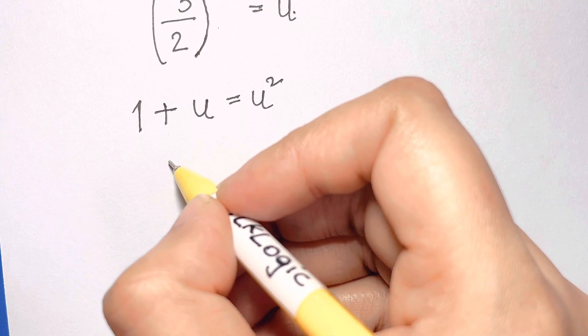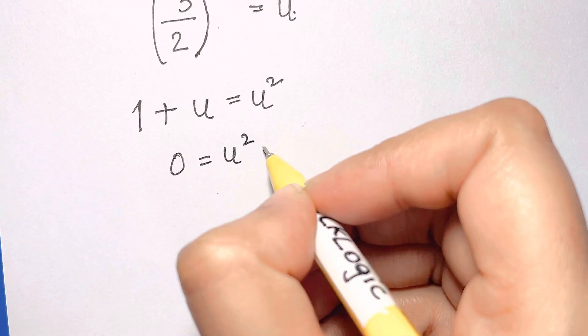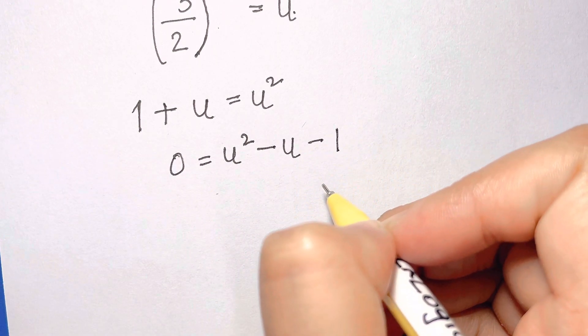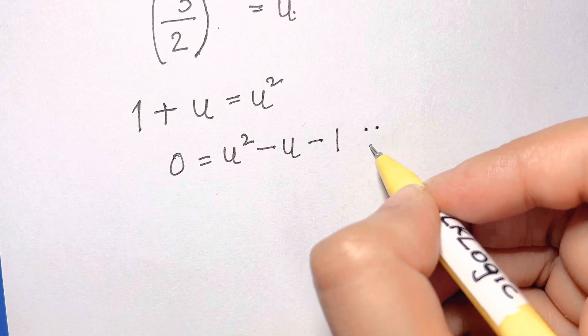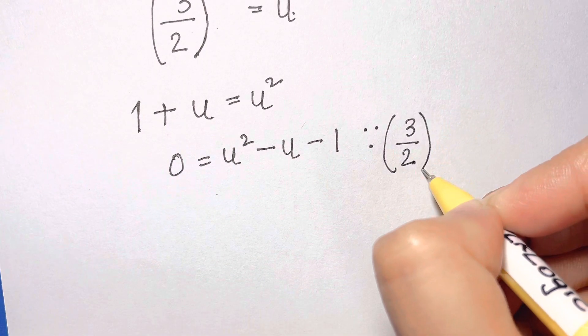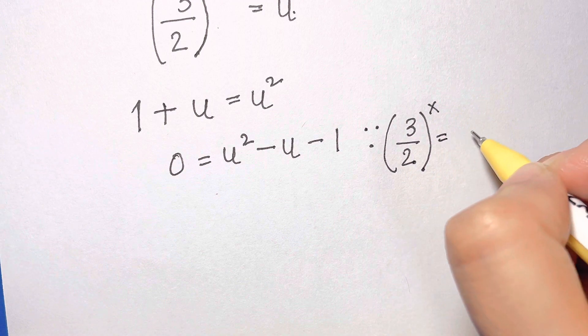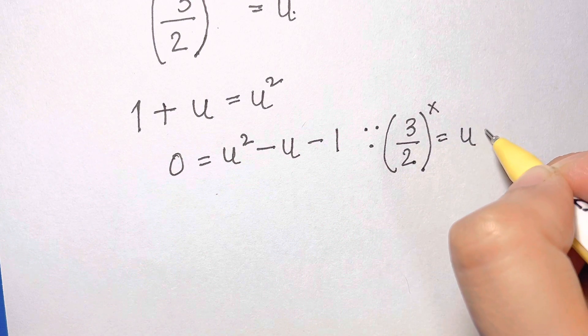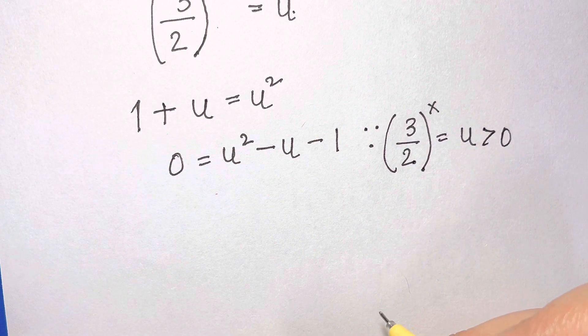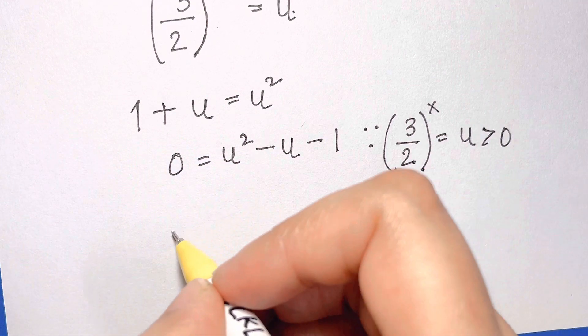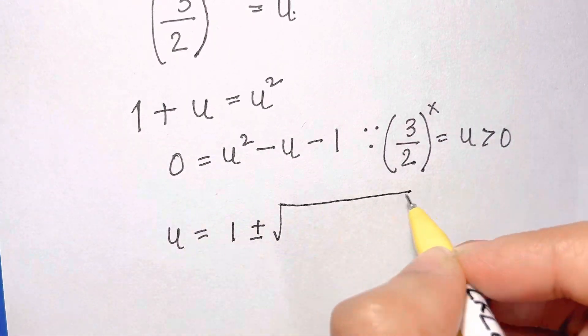Since u equals 3 over 2 to the power of x, we need u is greater than 0, because 3 over 2 to the power of x will be a positive term. We then use the quadratic formula and simplify.